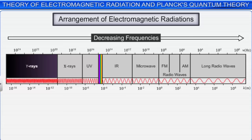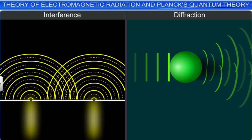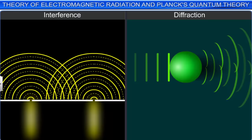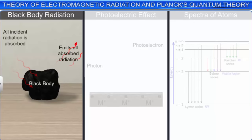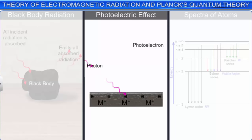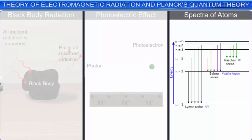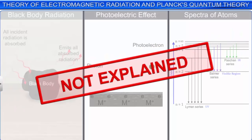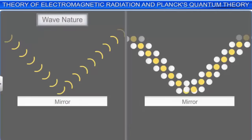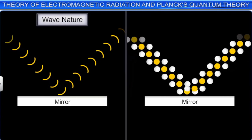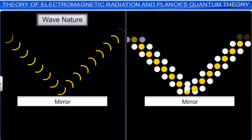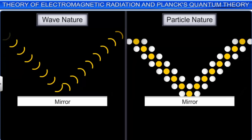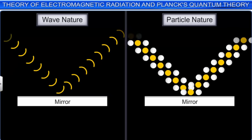The wave nature of electromagnetic radiation successfully explains the phenomena of interference and diffraction. But the phenomena of black body radiation, photoelectric effect, and the spectra of atoms were not explained. These things could be explained only if the radiation is assumed to be a stream of photons — that is, by considering the particle nature. Let's understand these phenomena one by one.